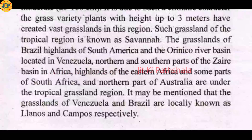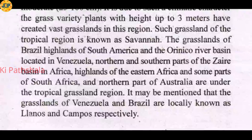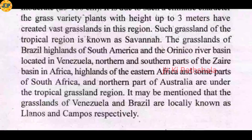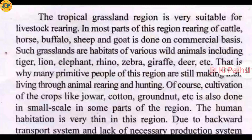It may be mentioned that the grasslands of Venezuela and Brazil are locally known as Llanos and Campos respectively. Although Savana grassland is found in both Brazil and Venezuela, their local names differ — in Venezuela it is called Llanos, while in Brazil it is called Campos.